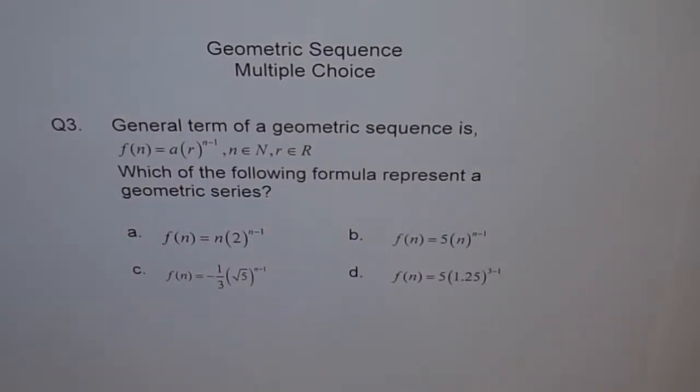Question 3, Multiple Choice on Geometric Sequence. General term of a geometric sequence is f(n) equals a·r to the power of (n minus 1), where n belongs to a set of natural numbers and r belongs to a set of real numbers.